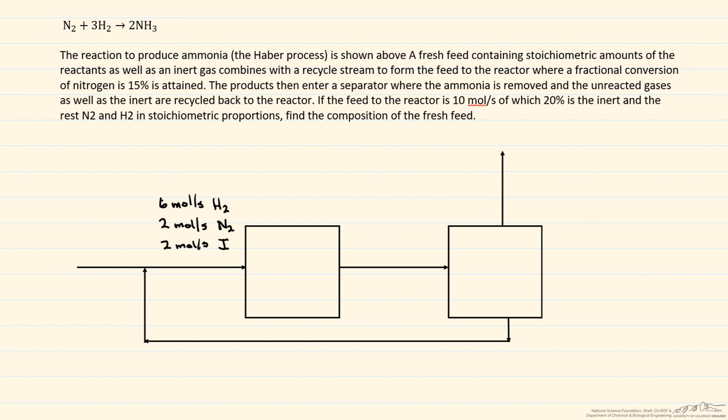So let's solve for that over here. We know that 0.15 is equal to the amount of nitrogen coming in, so that's two moles per second, minus the number of moles of N2 coming out, divided by two moles per second. And so that allows us to solve for the number of moles of N2 coming out, which is equal to 1.7 moles per second.